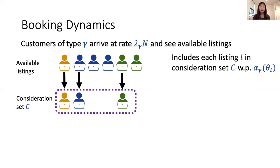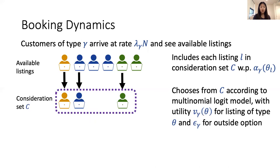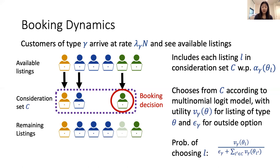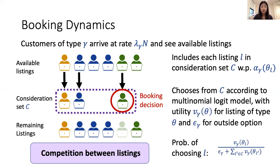Once customers have a consideration set, they have different utilities for each type of listing and a utility for the outside option, and will make a booking decision based on the multinomial logit model. In this case they choose a listing — where colors represent type — and this listing will be unavailable for some time. Note that this model captures competition between listings: if you increase the utility of one listing, that decreases the probability that the customer picks a different kind of listing. So marketplace competition shows up here.